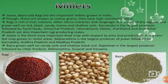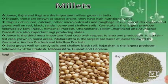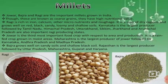Jowar, Bajra and Ragi are important millets grown in India, also known as coarse grains or mota anaaj. They have high nutritional value. Ragi is rich in iron, calcium, other micronutrients and roughage. It is a crop of dry season and grows well on red, black, sandy, loamy and shallow soils. Karnataka is the largest producer followed by Tamil Nadu. Himachal Pradesh, Uttarakhand, Sikkim, Jharkhand and Arunachal Pradesh are also important Ragi producing states.